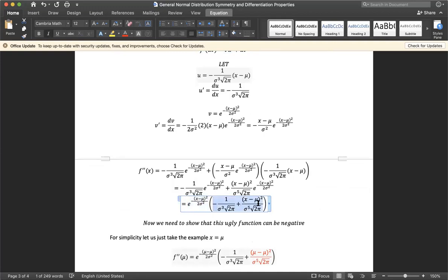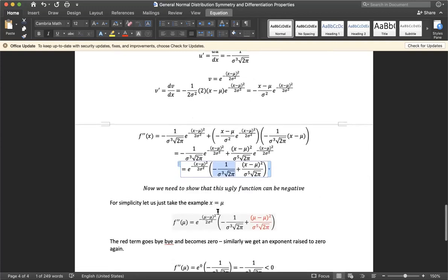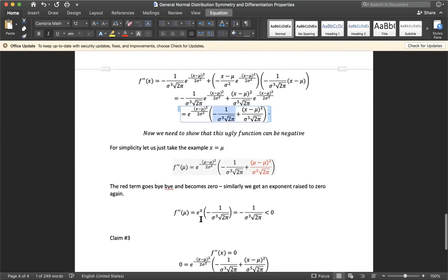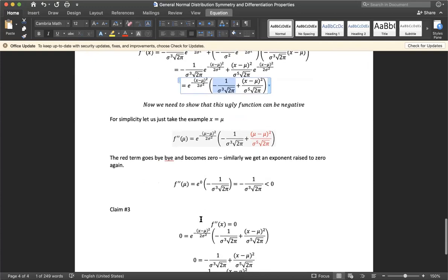We end up with the original exponential term multiplied by these two terms: negative one over sigma cubed times square root of two pi, and x minus mu squared divided by sigma fifth times square root of two pi. Luckily at mu this term becomes zero, and this term is always negative, so the second derivative function at mu is always negative. We've concluded that our critical point is a local maximum.